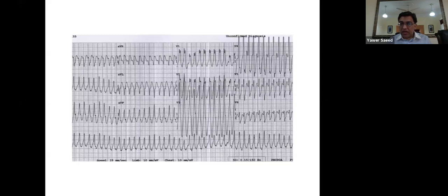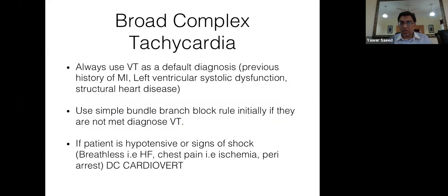This broad complex tachycardia example is actually atrioventricular reentry tachycardia — a patient with Wolff-Parkinson-White syndrome with heart rate exceeding 300 beats per minute. This requires immediate cardioversion. Broad complex tachycardia with VT as default is especially important in patients with prior myocardial infarction, ventricular systolic dysfunction, or structural heart disease.